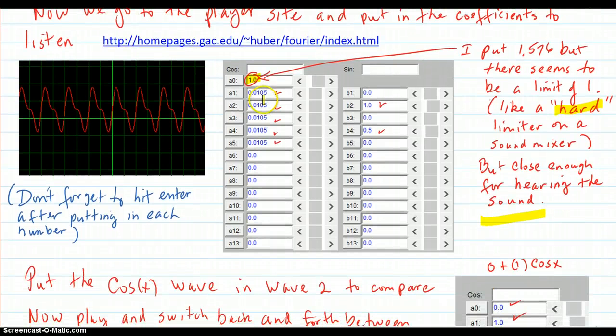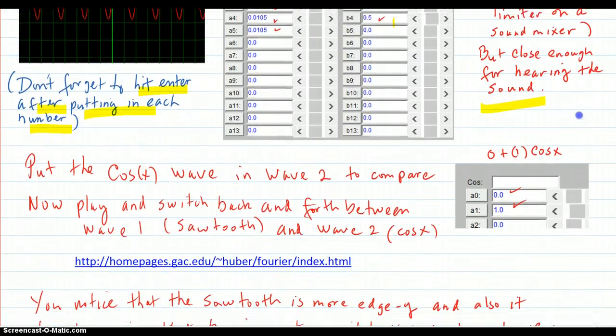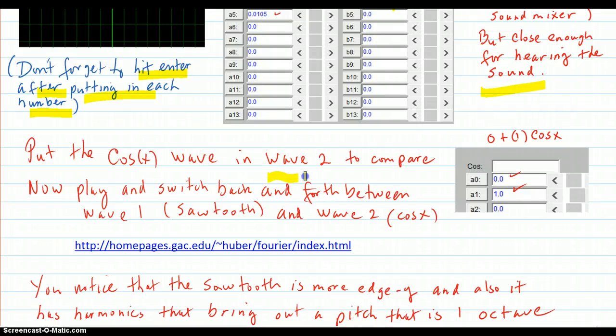When you put in the numbers, all these numbers here for your A's and here's your B's, don't forget to hit enter after each one. Somehow it doesn't register into the site unless you hit enter. So then put in the cosine wave in wave 2. Put in the cosine and that's just your 0 plus 1 cosine. So you got the 0 and you got the 1 on the A0 and A1. Now play and switch back and forth between wave 1, which is a sawtooth, and wave 2 is a cosine to compare.